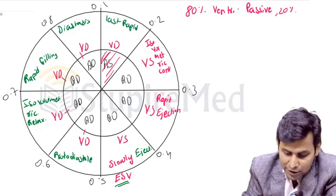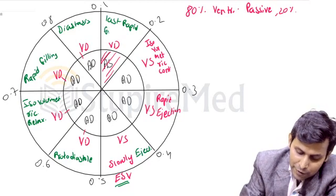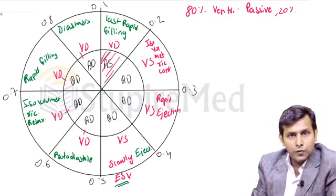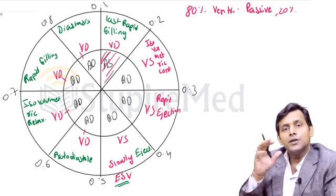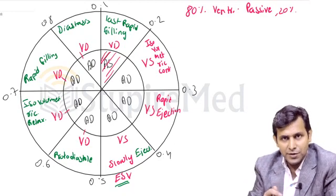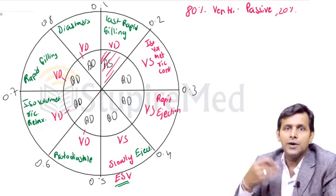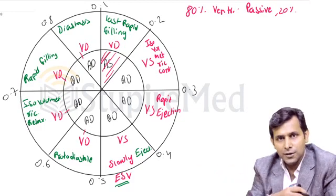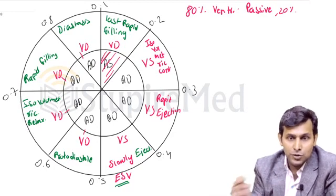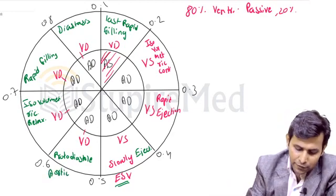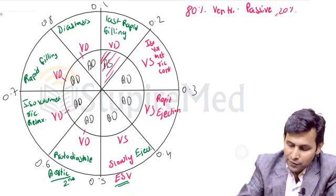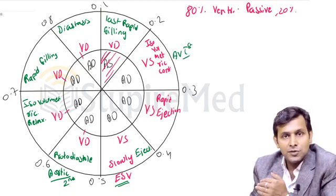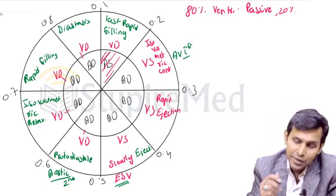The last rapid filling phase of ventricular diastole coincides with atrial systole, so the last part of ventricular filling is active. During protodiastole, the moment ventricular systole gets over, the ventricular pressure starts decreasing. The increased aortic pressure causes backflow of blood from the aorta, which causes closure of the aortic valve. This aortic valve closure causes the second heart sound, whereas AV valve closure causes the first heart sound.